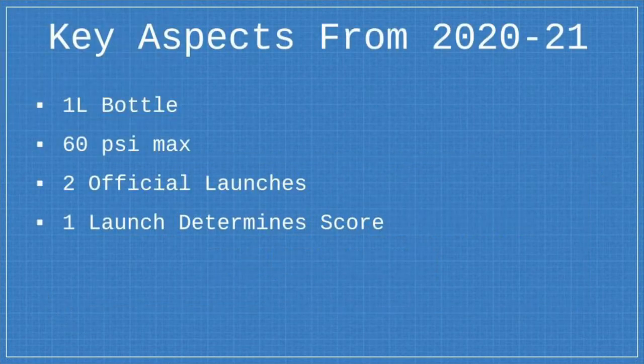Let's look at the key aspects from last year. First of all, you were limited to a 1 liter bottle. Only 65 PSI maximum could be used to launch your bottle rocket. You had two official launches, and only one of those two official launches determined your final score.